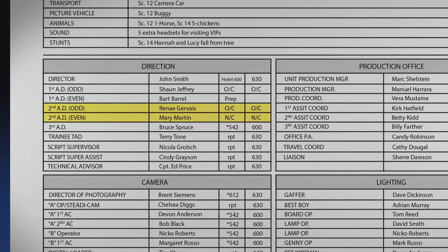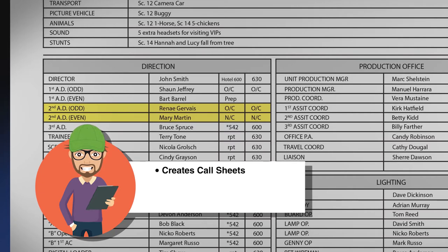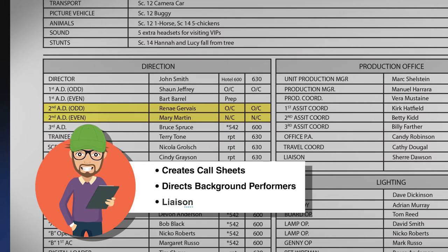The second assistant director is in charge of creating the call sheets and distributing them. The second will assist the first AD in directing background performers when required. The second AD also liaises between the set, the production office, and the production manager.